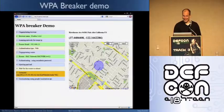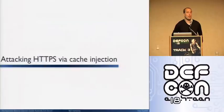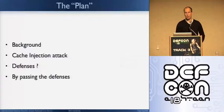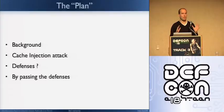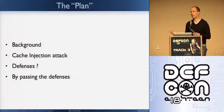The second story is about HTTPS — we're going to show you how we can make HTTPS a little bit irrelevant. It's a complex attack, so I'm going to go through five steps: first, background on how a page is constructed; then what the cache injection attack is; then current browser defenses against it; and then how we were able to bypass them.